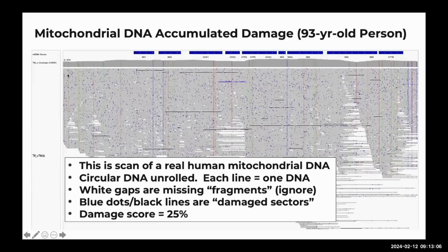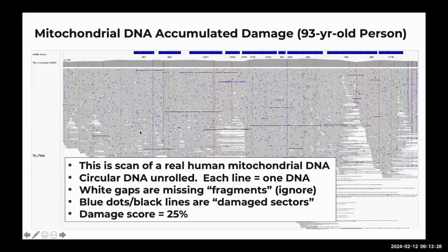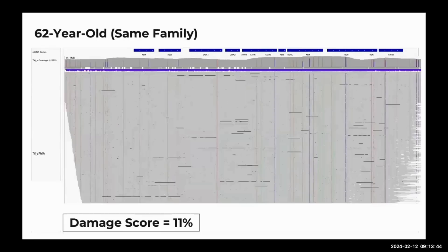I want to show you a mitochondrial DNA scan of my mother, who is now 94. We got a urine sample, and what you're seeing is the DNA structure of her mitochondria. Each gray line across the plot is one strand of mitochondrial DNA — we got about 500 of them, sequenced them, and laid them in a plot. This is a very common way of doing it.